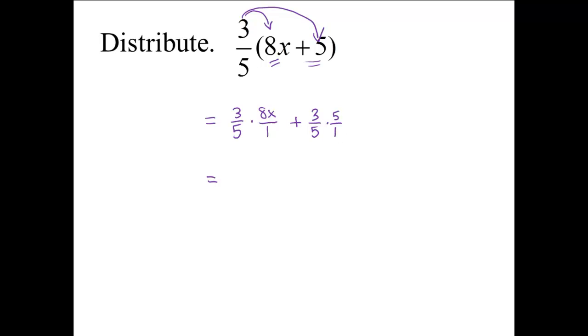Now let's simplify. The rule for multiplying fractions is to multiply through the numerators. 3 times 8x is 24x, and multiply through the denominators. 5 times 1 is 5.